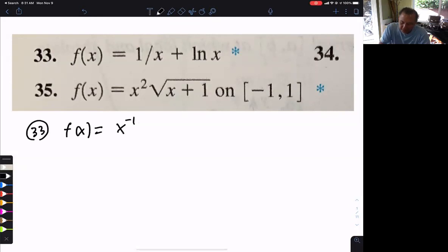I'm going to rewrite the function like such and then take the derivative. The negative 1 comes in front, decrease the power by 1 and that's 1 over x. Then rewrite this.